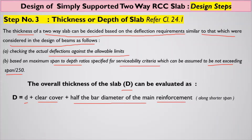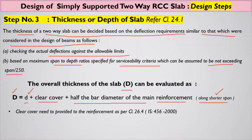Since there are two spans — LX and LY — we will focus on the shorter span. When calculating the effective depth or overall depth of the slab, we take into consideration the centerline of the main reinforcement along the shorter span. The clear cover is taken as per Clause 26.4, based on the exposure condition and the minimum clear cover required.